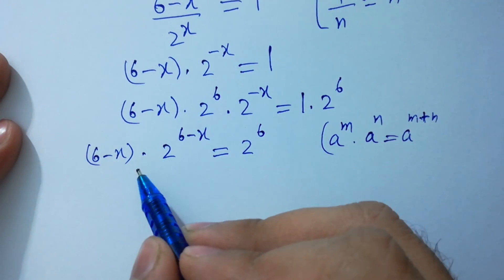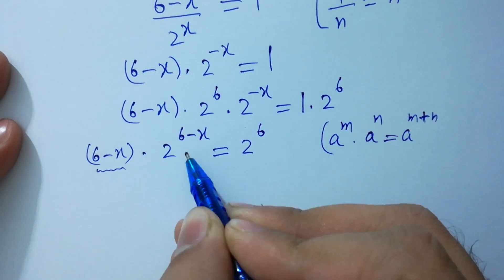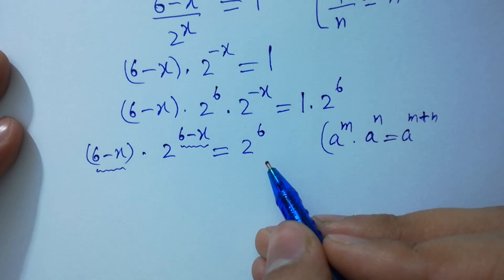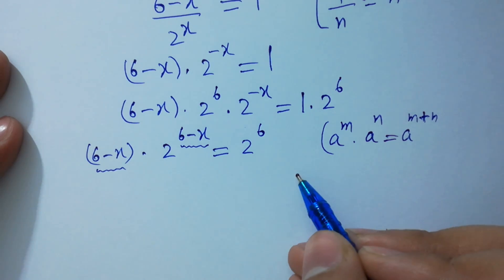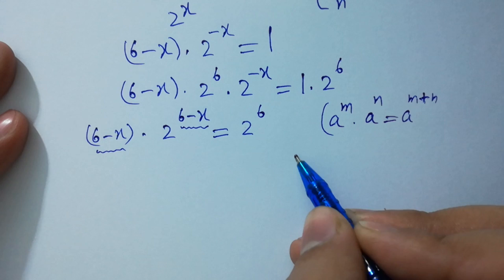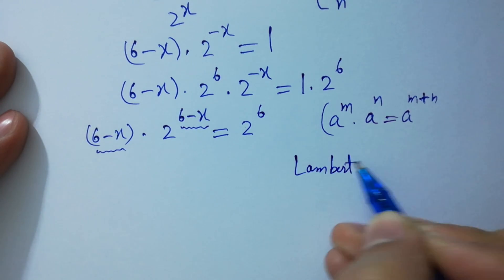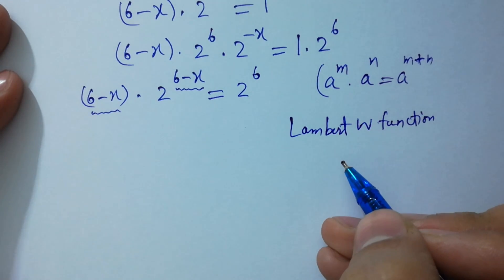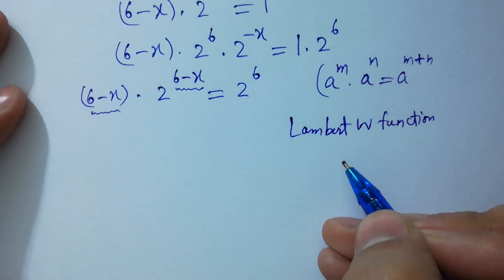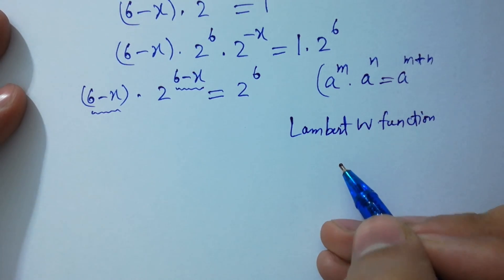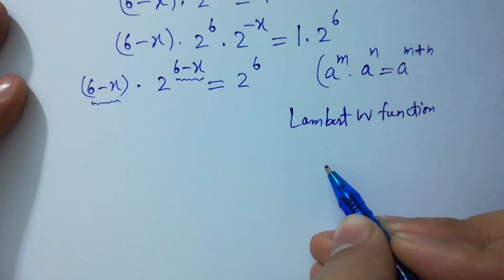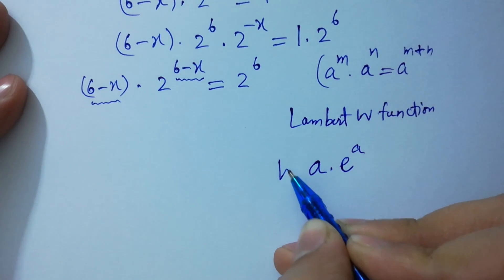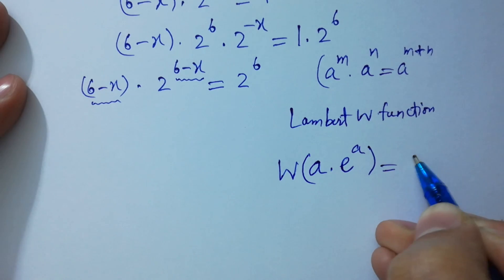Now you can see that 6 minus x appears both as a base and as the exponent's term, so we can use the Lambert W function. Do you know what the Lambert W function is? It's easy: if we have an expression a times e to the power a, and apply the W function, it equals a.